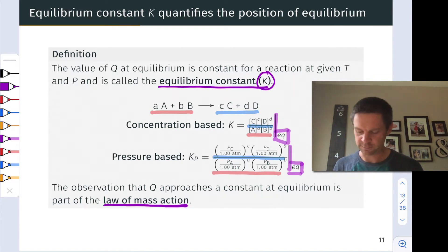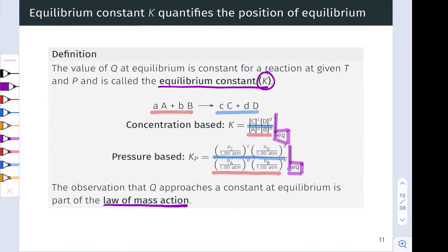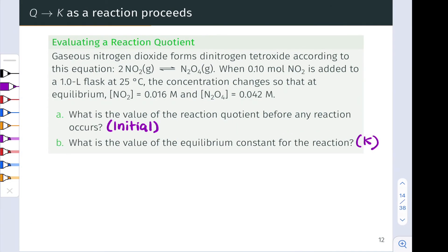In this practice problem, we're asked to calculate the value of Q, the reaction quotient, before any reaction occurs at a state that we'll refer to as the initial state. And then we're asked to determine the value of the equilibrium constant for the reaction. And we can do this if we know the equilibrium concentrations, plugging into the reaction quotient the equilibrium concentrations.